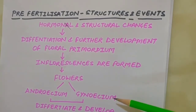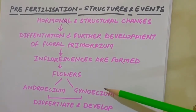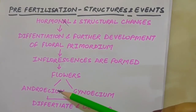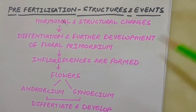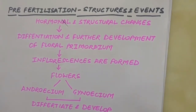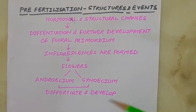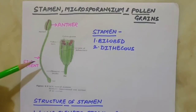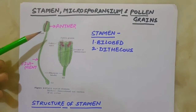In the flower, the male and female reproductive structures, that is androecium and gynoecium, differentiate and develop. Androecium consists of a group of stamens representing the male reproductive organ, and gynoecium represents the female reproductive organ. Androecium is the collective term used for all the stamens present in the flower, and gynoecium is the collective term for the carpels of a flower. Let's have a look at the structure of the stamen first.